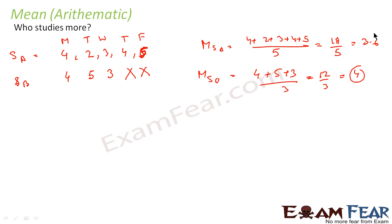We see that mean of student A is more than mean of student B. From this we can say that student A studies more than student B. It may not be correct because maybe this guy studied 10 hours on other days, but since we don't have data, from whatever data we have we can conclude that student A is studying more.